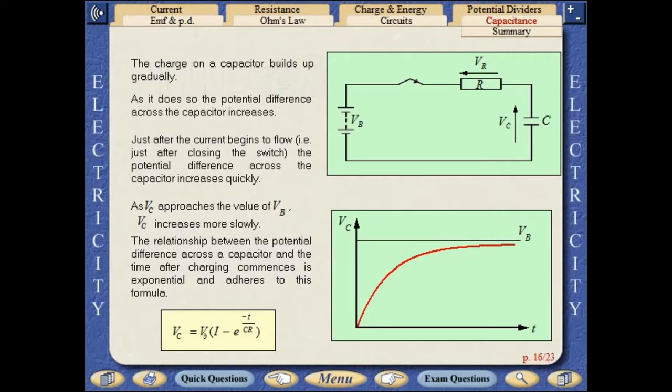The charge on a capacitor builds up gradually. As it does so, the potential difference across the capacitor increases. Just after the current begins to flow, that is just after closing the switch, the potential difference across the capacitor increases quickly.